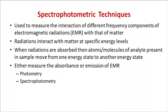Spectrophotometry is used in pharmaceutical analysis for the identification of analyte through the spectrum — that is why it is called spectrophotometry. Photometry is the measurement of intensity of light, and spectrophotometry is a combination of spectrum and photometry, meaning light at selected wavelengths. The identification of analyte through the spectrum can be through absorption or emission by the analyte present in the sample.